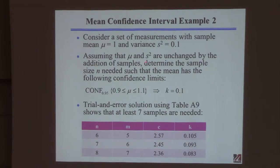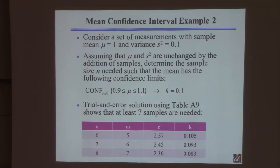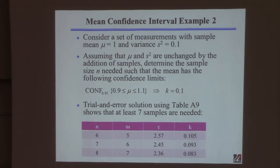Obviously if you get more samples and add them to your data set it'll likely change the estimates of mean and variance, but for simplicity I'm assuming that's not the case. The question I'm asking: how many samples are required so that I'm 95% confident the mean is between certain limits? The other problem I specified everything and calculated the limits; now I'm specifying the limits and asking how many samples I need.